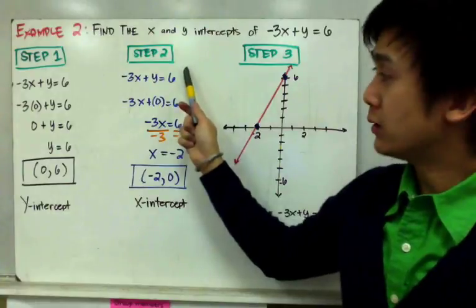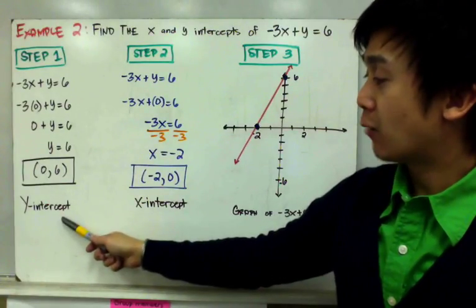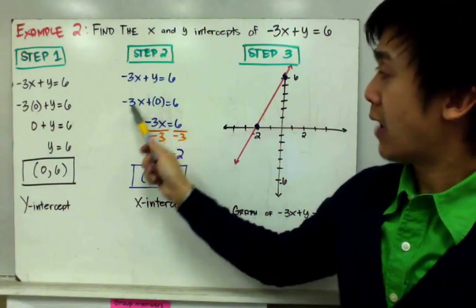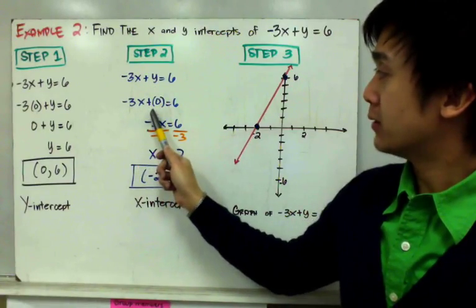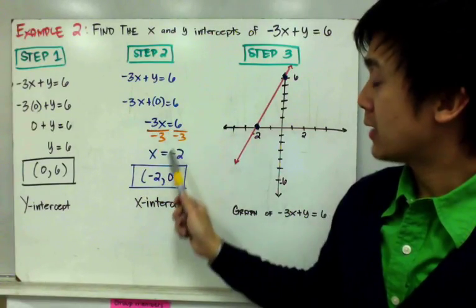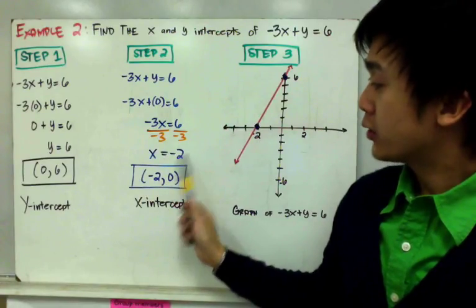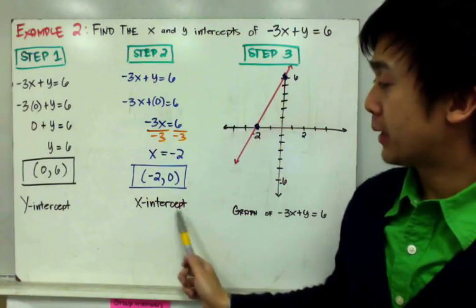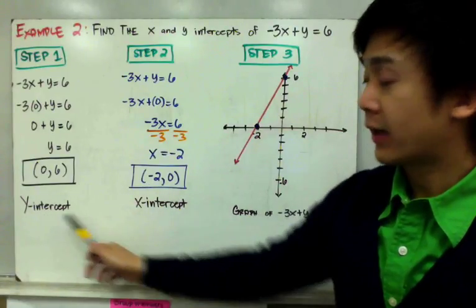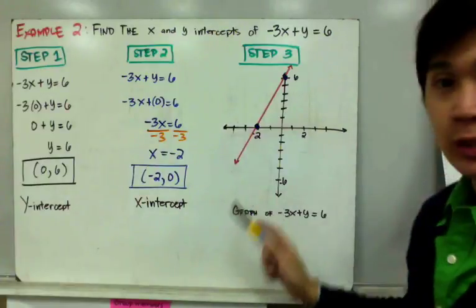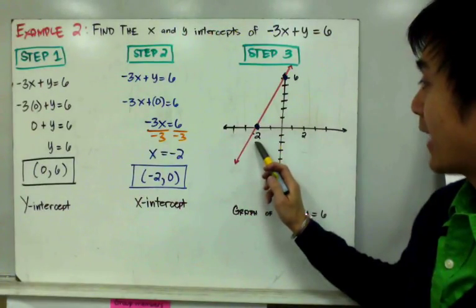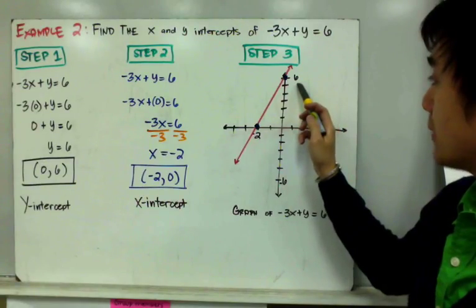For step 2, we find the x-intercept by setting y to 0. We get negative 3x plus 0 equal to 6, so negative 3x equal to 6, giving x equal to negative 2. The x-intercept is at (−2, 0). With both intercepts, we can graph the line. Connecting (−2, 0) and (0, 6) gives the graph of negative 3x plus y equal to 6.